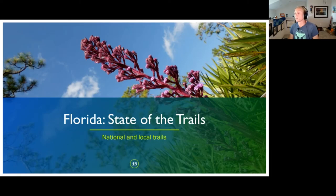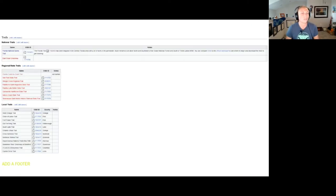Okay, state of the trails. So we have both national and local trails. This is the Florida OSM wiki. So we have two national trails in Florida, Florida National Scenic Trail and the East Coast Greenway. We have regional state trails, and this is not a complete list. And then here are some of the local trails that I have looked at but not worked on.